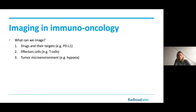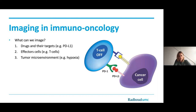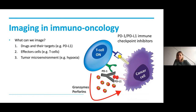With imaging, we can look at the drugs, the effector cells, and the tumor microenvironment. Today I will give examples of these three components with respect to micro-SPECT CT imaging, mainly focusing on the interaction between the immune checkpoint PD-1 and PD-L1. PD-L1 is an immune checkpoint protein that can be upregulated by cancer cells. When it binds to PD-1 on a T cell, an inhibitory signal is transmitted, turning the T cell off so it can no longer kill the cancer cells. Immune checkpoint inhibitors directed against PD-1 or PD-L1 block this interaction, reactivating the T cell — this is immune checkpoint inhibition.